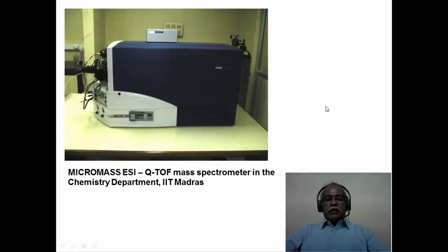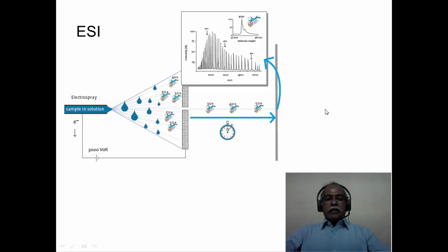Here is an electrospray ionization mass spectrometer housed in the Department of Chemistry at IIT Madras. You can see it is just a box that fits on a tabletop, but it can do wonders in terms of mass analysis, molecular weight determination, and sensitivity. In the electrospray ionization mass spectrometer, there is an injector which sprays the analyte solution as very fine droplets in a voltage region, where the sprayer is one electrode and there is a counter electrode. There is also a nebulizing gas passed through the sample.